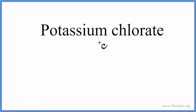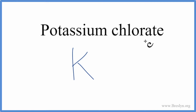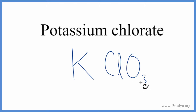To write the formula for potassium chlorate, we look on the periodic table and potassium is K. Then chlorate — you won't find that on the periodic table. When you see this A-T-E ending, that means you need to look it up on a table of common polyatomic ions, and chlorate is ClO₃⁻.